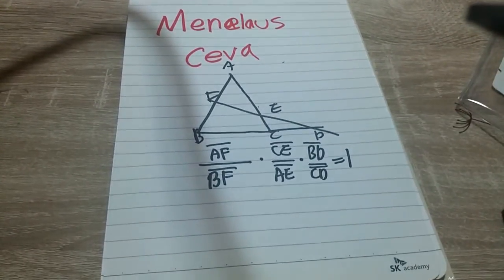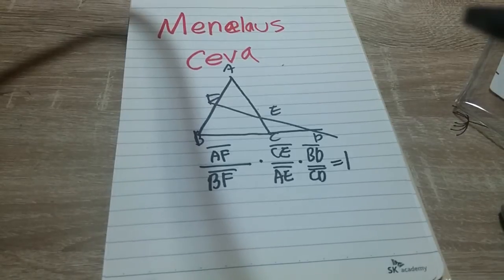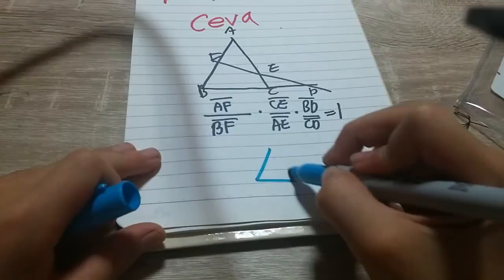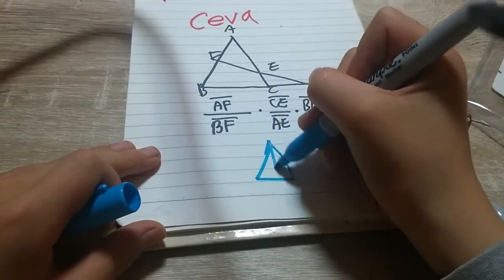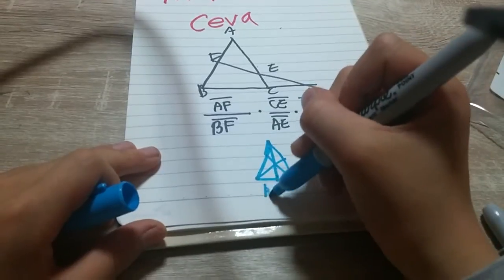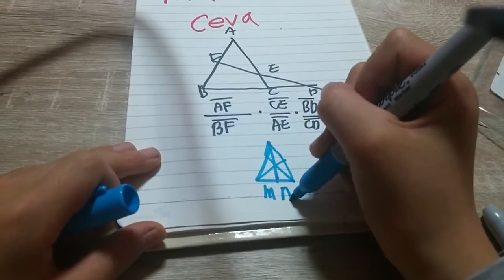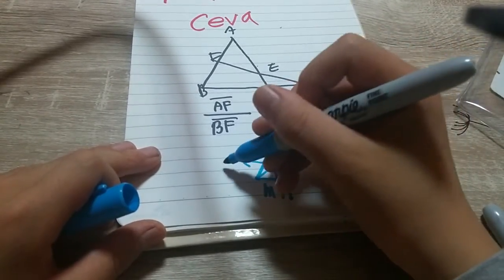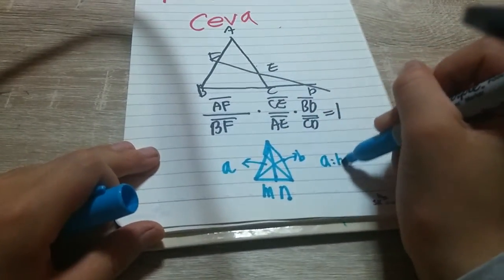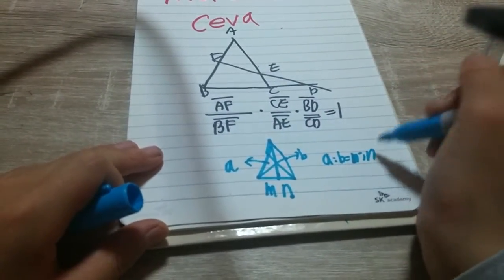This is the Menelaus theorem, and to prove it you first need to know this thing. I have a triangle, and you have this. If this is M to N, this triangle A, this triangle B is also M to N.